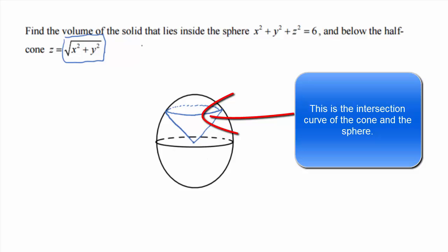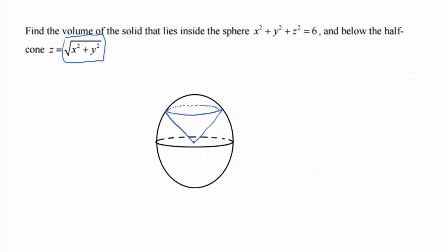Okay. So the z-axis would be coming out like this. Notice how I'm not drawing everything, just the bare minimum. There's the z-axis. And I want the volume that lies inside the sphere and below the half cone.